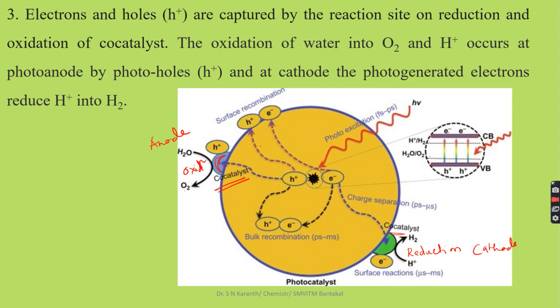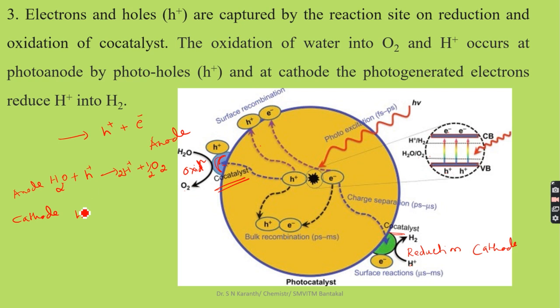To summarize the process: first, electron-hole pairs are produced. Water molecules, with the help of holes, form H⁺ ions and oxygen evolves at the anode — half a mole of oxygen. At the cathode, H⁺ ions take the excited electrons to produce hydrogen gas. So the water molecule takes photon energy to split into hydrogen and oxygen.